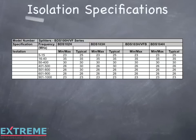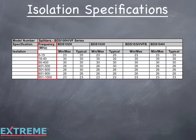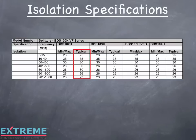Let's take a look at isolation specification sheets. Here we're showing a specification sheet for a broadband digital splitter series, which includes the two-way, three-way, three-way balance, and four-way splitters. On the left-hand side is the column labeled frequency, where we break the frequencies into seven different bands starting with 5 MHz going up to 1 GHz. Next to that is the column labeled min-max — these are the worst-case isolation numbers for these devices, normally used by engineers and designers of cable systems. Next is the column labeled typical, showing the specification numbers you would typically see from the majority of these devices in the field. The higher the isolation specification value in dB, the better the isolation.